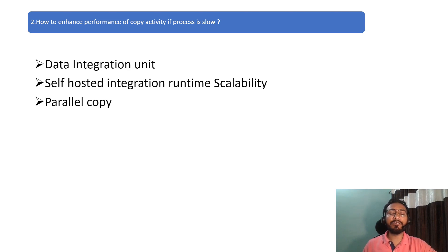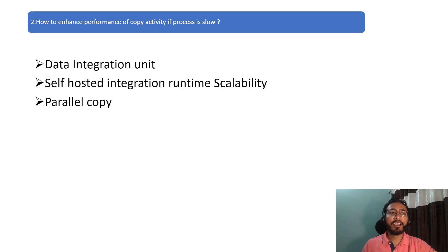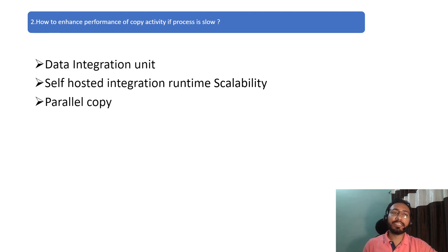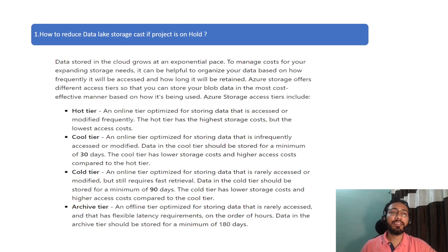The third step is parallel copy. You get this option in the copy activity settings. You can choose how many parallel runs you want — up to 32 parallel runs. Suppose you have one file that is 24 GB; you can split it based on your parallel copy assignment. So to summarize the answer for copy activity performance: define your Data Integration Units, configure scale up or scale out on your self-hosted IR if needed, and set parallel copy on the copy activity.